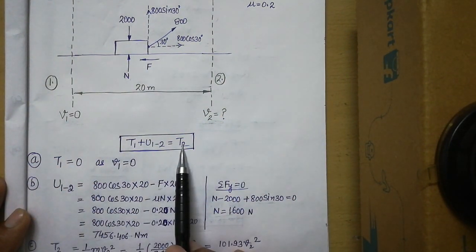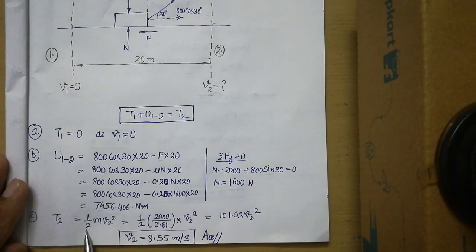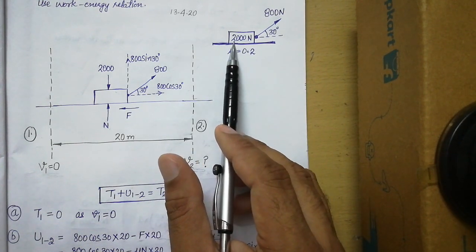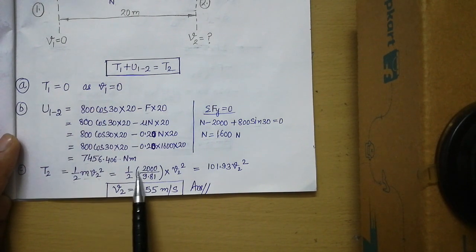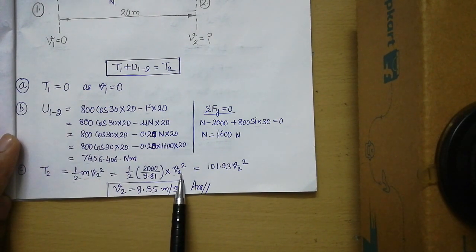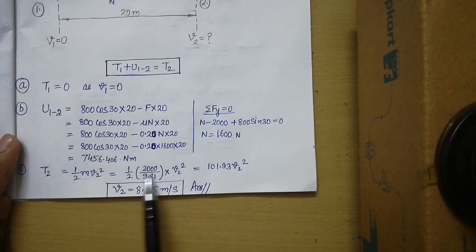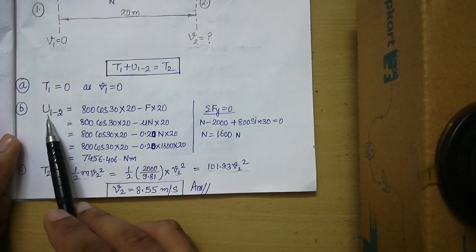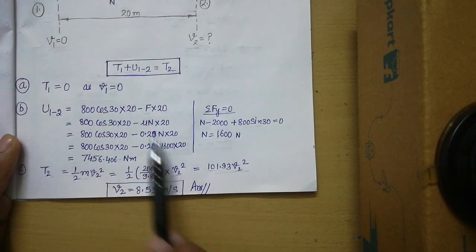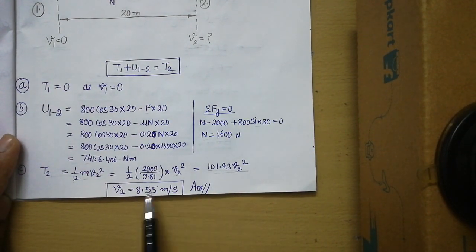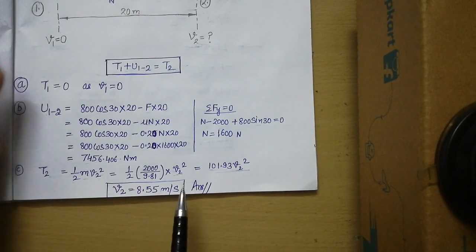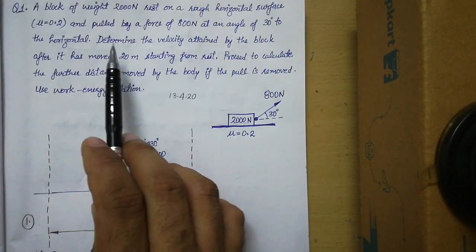The third variable in the equation is the final kinetic energy, equal to ½mv₂². The weight is given in Newtons, so mass equals 2000 divided by 9.81 kg. Therefore final kinetic energy is ½ × (2000/9.81) × v₂². When all variables are substituted into the work-energy equation, the only unknown is v₂, and solving gives v₂ equal to 8.55 meters per second. The first part of the problem is now complete.